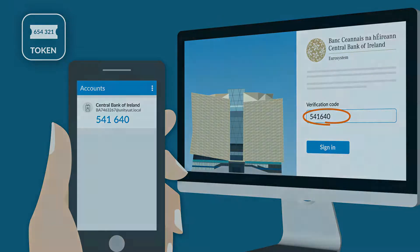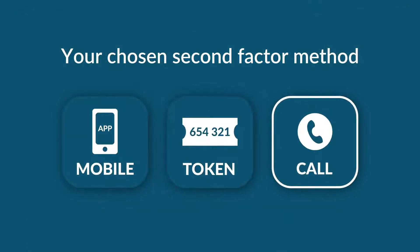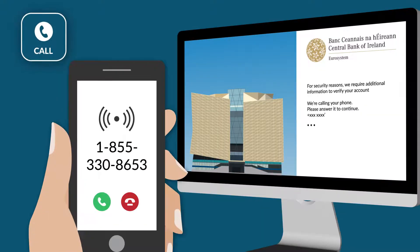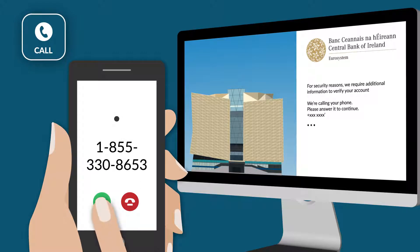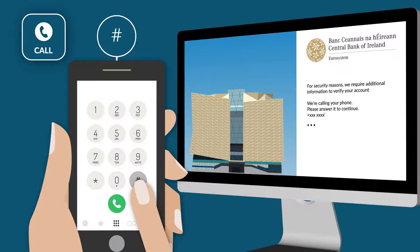If your second factor method is a phone call, you will receive an automated phone call immediately. Answer the call and follow the instruction to press the hash key on your phone to complete your authentication.